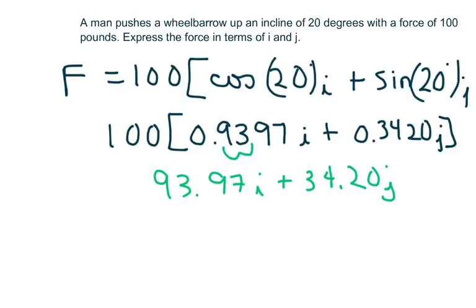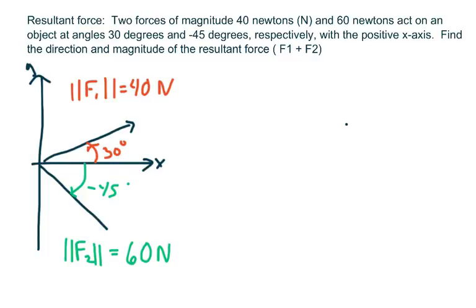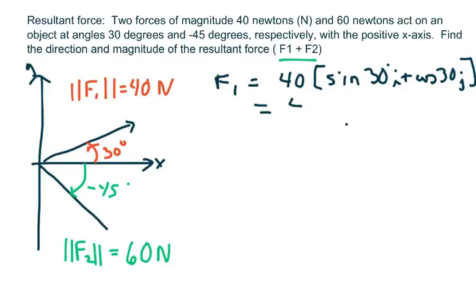Now, the next two, we're going to have to find the resultant force. So we have two forces of magnitude 40 newtons and 60 newtons acting on an object at angles 30 degrees and negative 45 degrees. And we have to find the direction and magnitude of the resultant force. In other words, we're going to add these two vectors together. And so basically, we're going to do force one and force two. So force one is simply 40 times sine of 30 degrees i plus cosine of 30 degrees j. I flipped this, but that's okay. It's not okay, because the cosine always has to go with the i and the sine always has to go with the j.